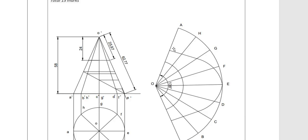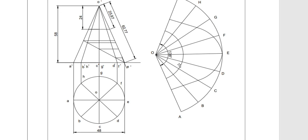To draw the development, you use the equation theta = (R / L) × 360, where R is the radius of the base circle and L is the slant length. On measurement, you get the slant length as approximately 62.77 mm. The radius is 24 mm. Using the relation theta = (R / L) × 360, you get the angle as approximately 138 degrees.